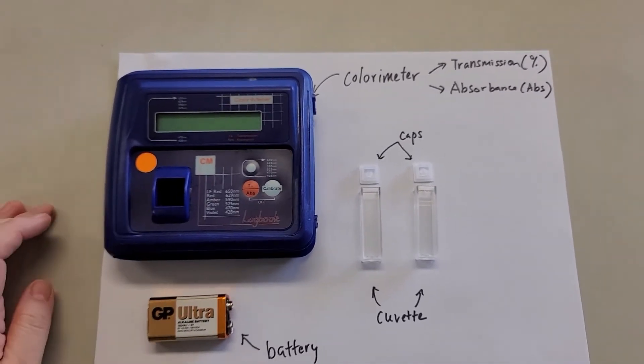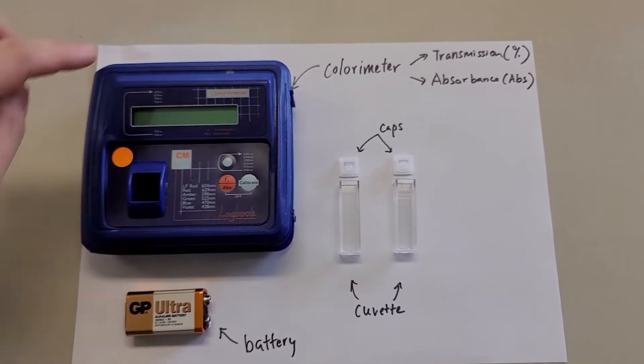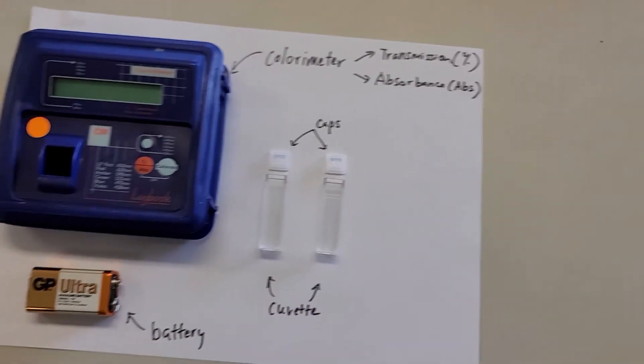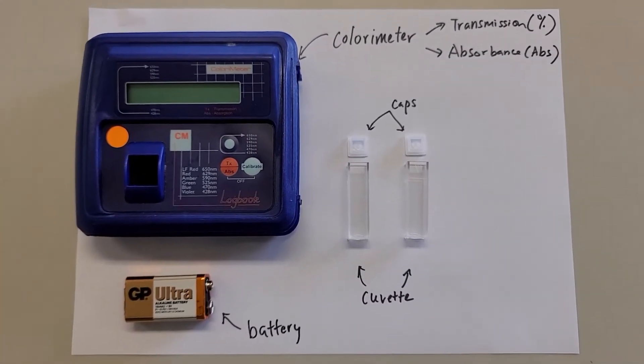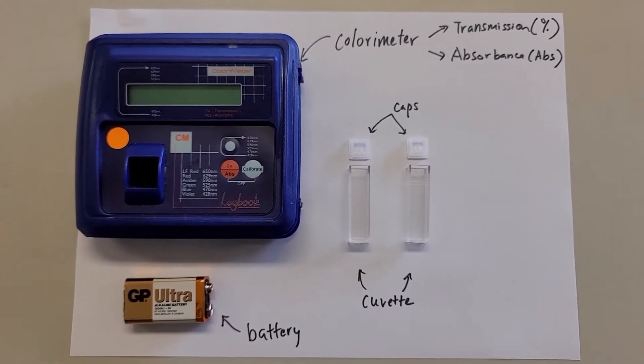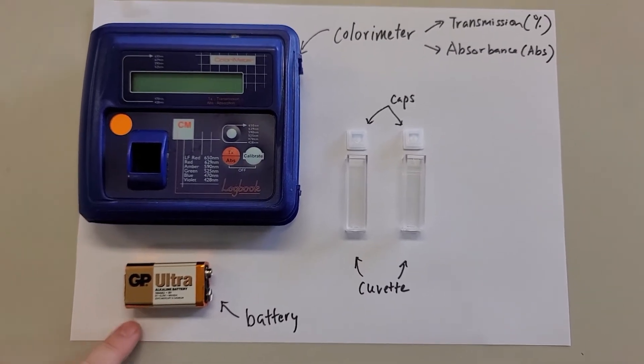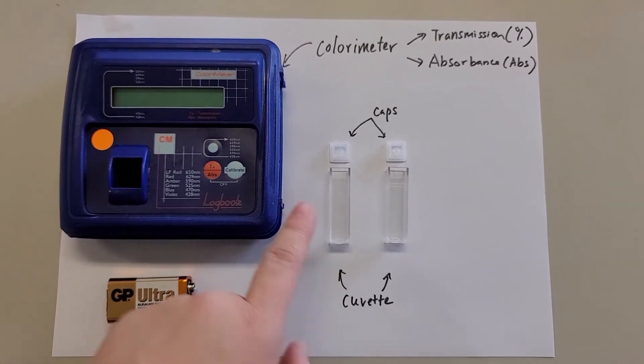So first of all, you will need the colorimeter. The colorimeter has two functions. One of them is transmission, the other one is absorbance. And then you will need the battery, a cuvette, and the two caps.